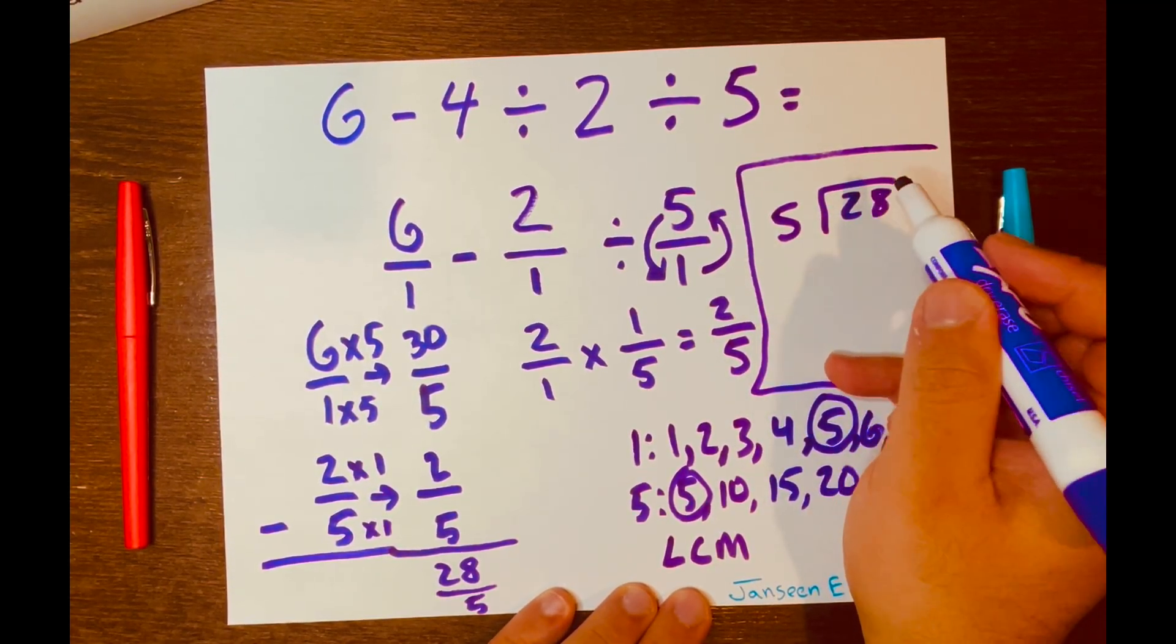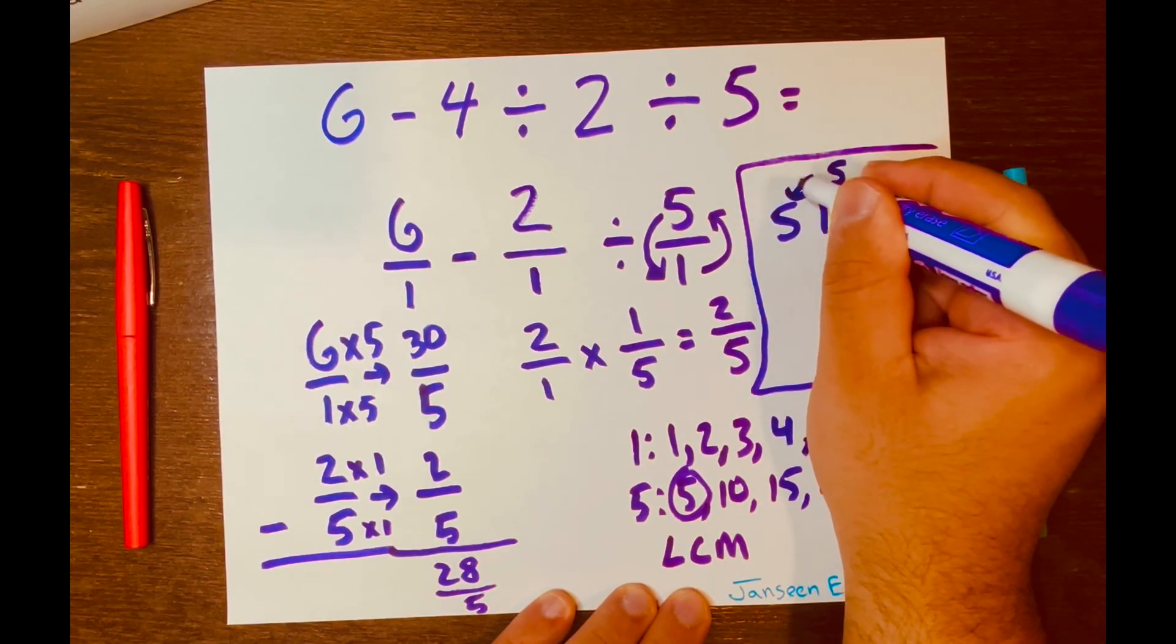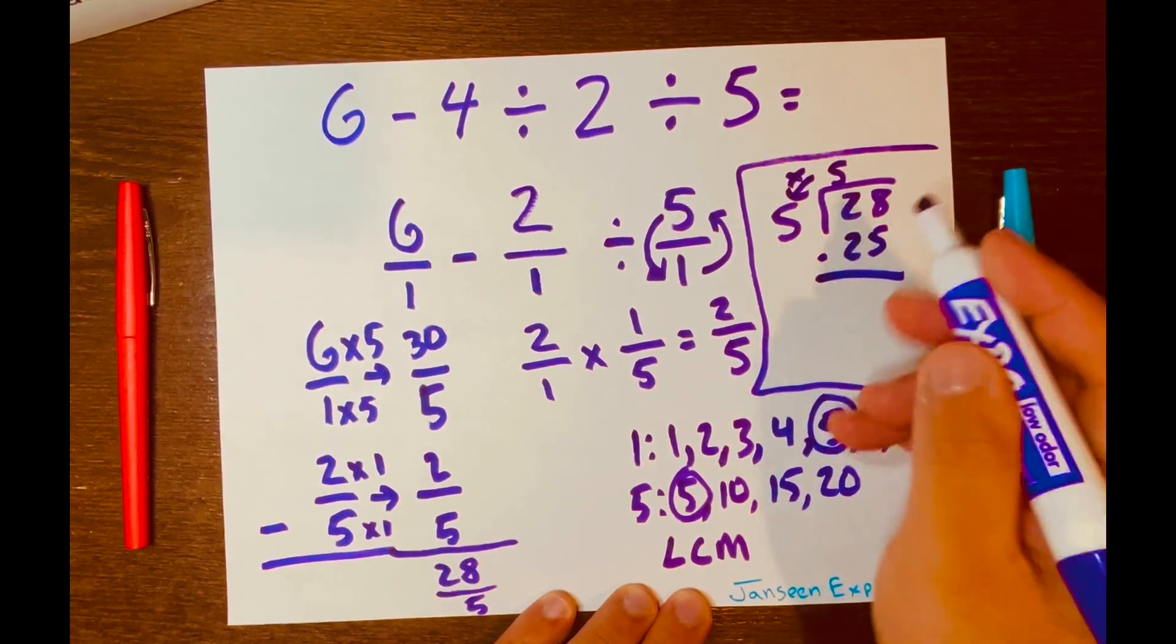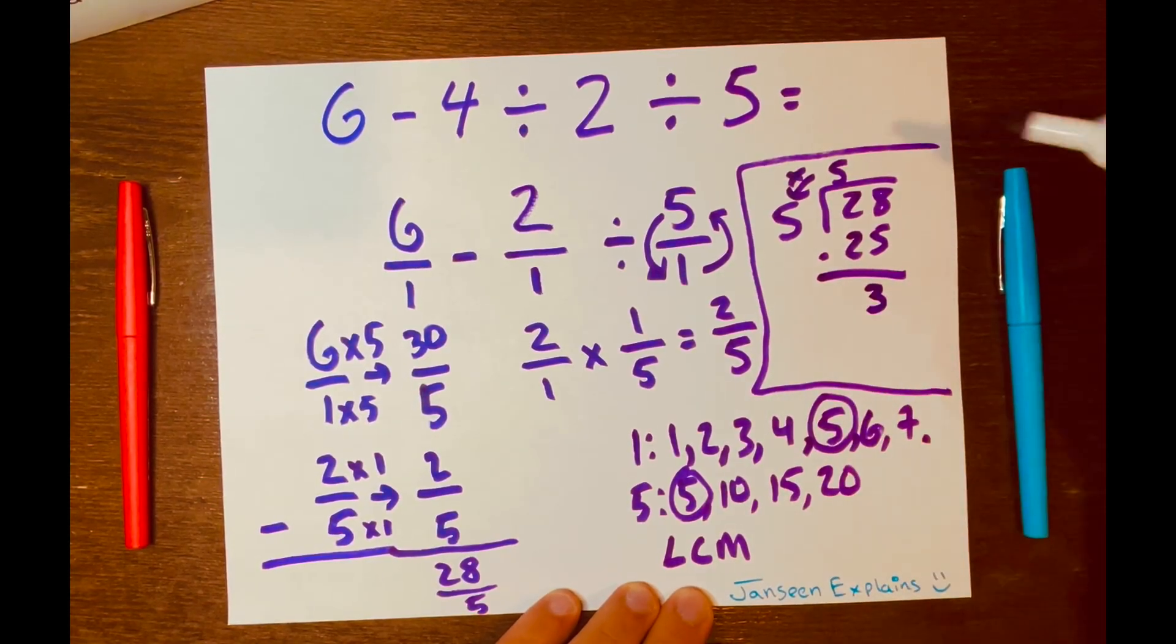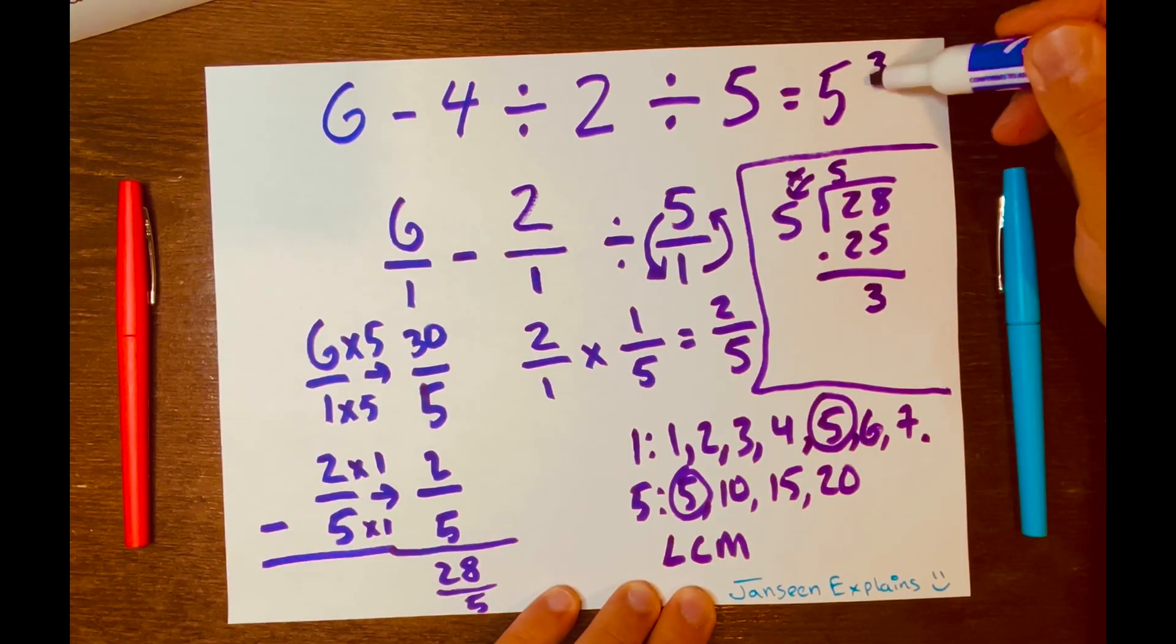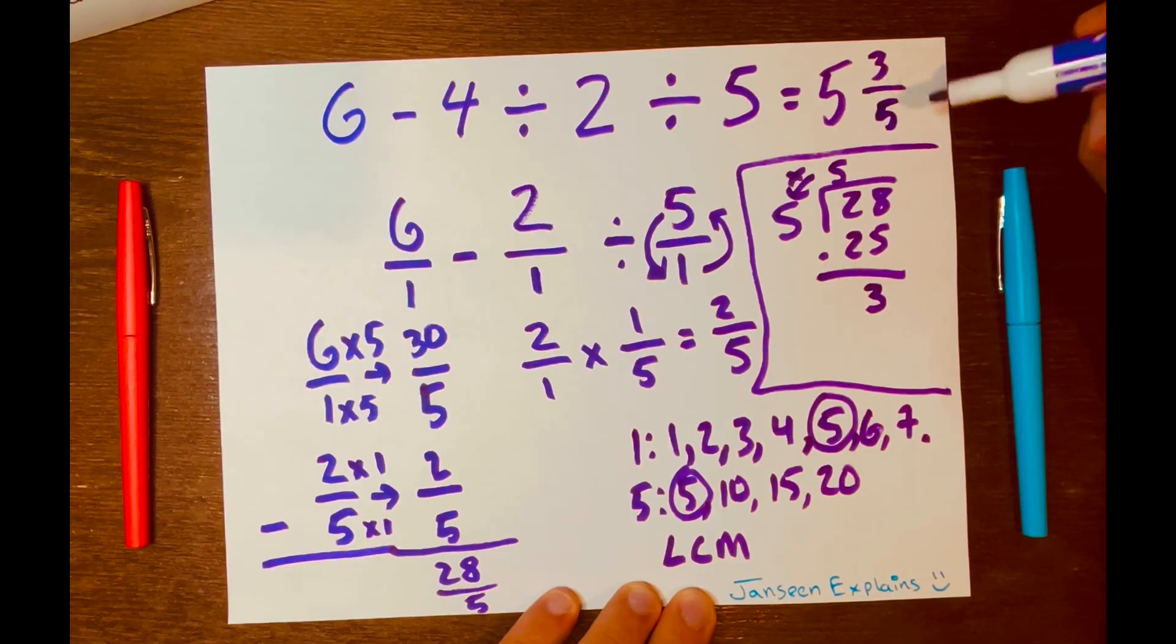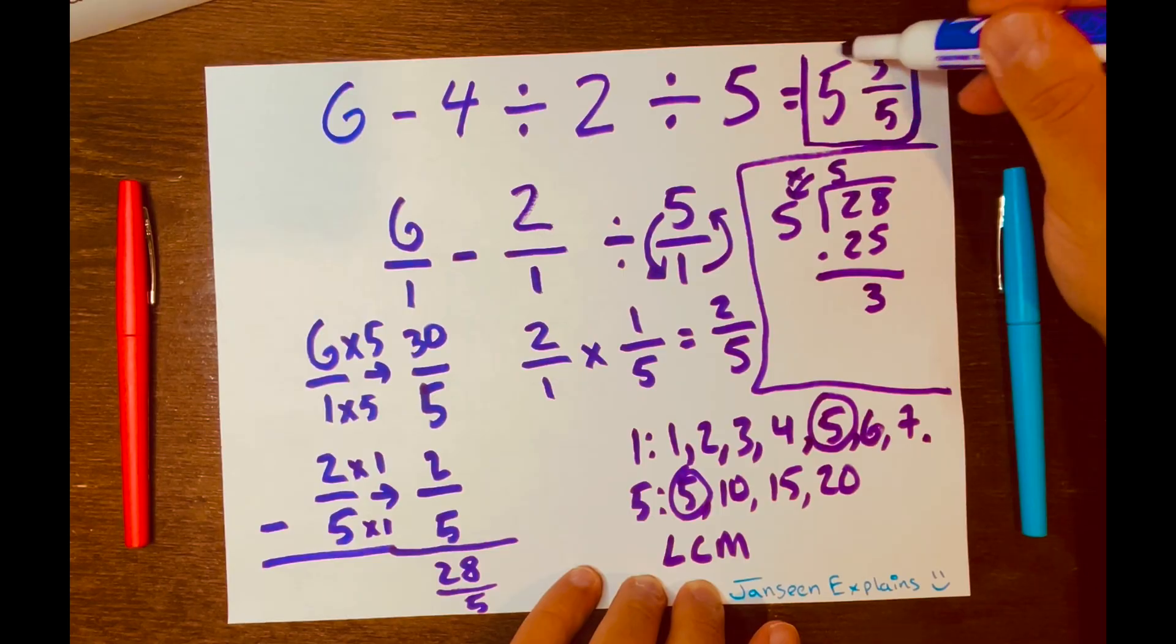Well, 5 × 5 is 25. So you can fit 5 of them. And then you multiply 5 × 5 = 25. And then 28 - 25 is 3. So your whole number is 5, 3 (your remainder is your top number of the fraction), and then 5, your denominator. So your answer is 5 3/5.